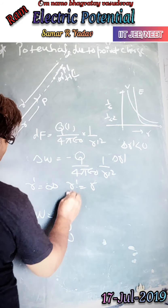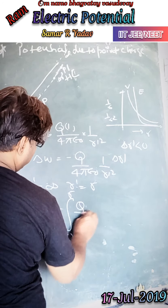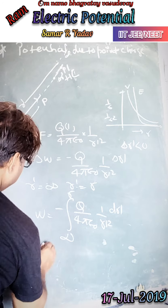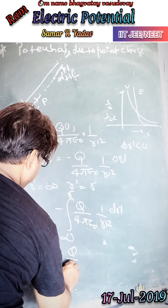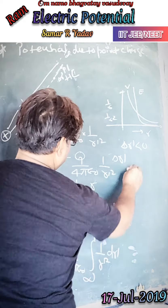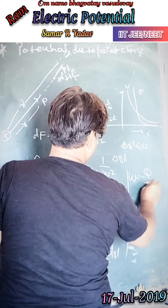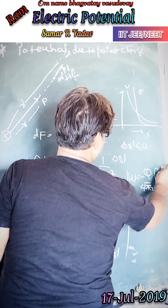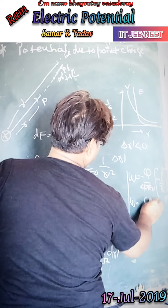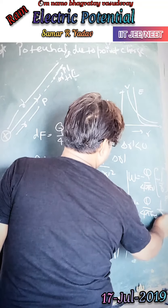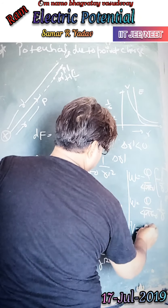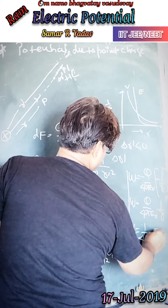W equals the integration from infinity to R of minus Q upon 4πε₀ times 1 upon R-dash squared, with respect to R-dash. Solving this, we take Q upon 4πε₀ outside. Integrating 1/R-dash² gives minus 1/R-dash. Evaluating from infinity to R, we get W equal to Q upon 4πε₀ times 1 upon R. This is the potential due to the point charge.